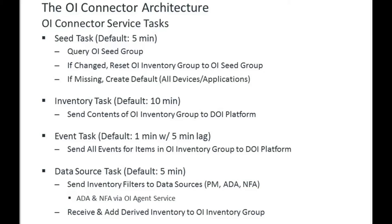The data source task fires every five minutes. The connector sends down to the various data sources — PM, ADA, and NFA — the latest inventory being monitored, instructing them to update and send metrics on that inventory. For CAPM data collected at a one-minute poll interval, you will get five data points per flow to the DOI platform when the task fires every five minutes.